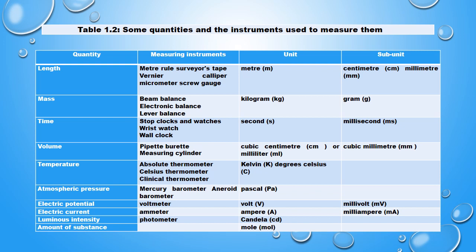This is the summary of the quantities and their units. Length is measured in meters; mass in kilograms; time in seconds; volume in cubic centimeters or cubic milliliters; atmospheric pressure in Pascals; electric potential in volts; electric current in amperes; luminous intensity in candela; and amount of substance in moles. Subunits include centimeters and millimeters for length, grams for mass, milliseconds for time, millivolts, and milliamperes.